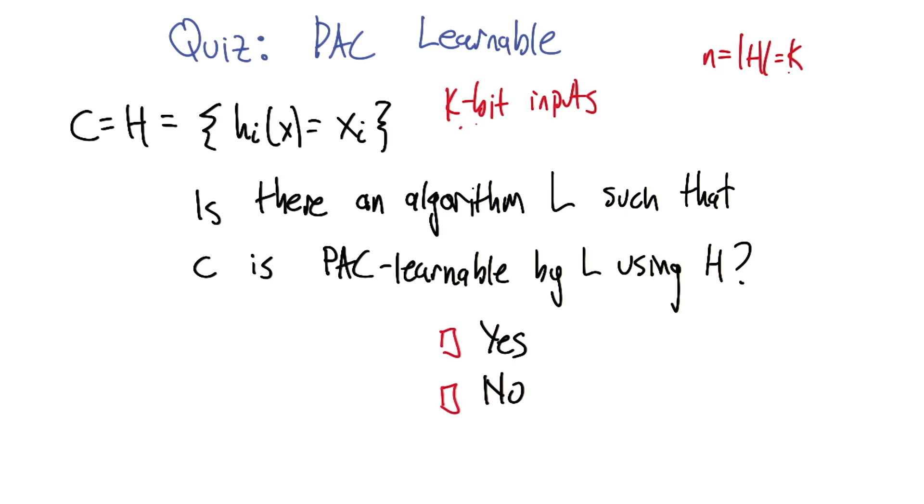And I want to know whether I'm going to need to see a number of examples that are polynomial in the error that I'm interested in with the certainty that I'm interested in. And I've got to be able to come up with an algorithm, a learning algorithm that will do that. Exactly.